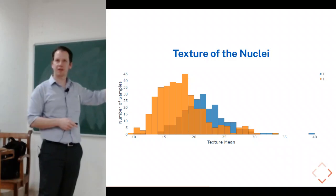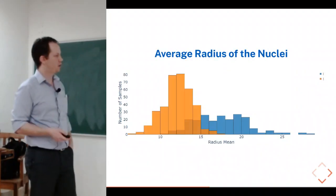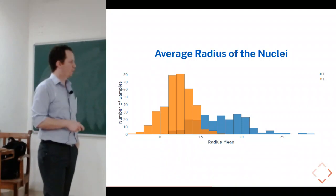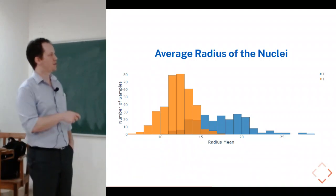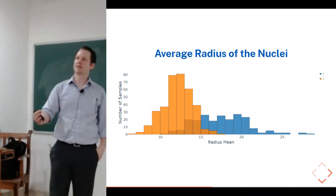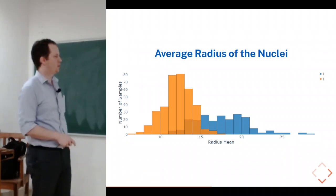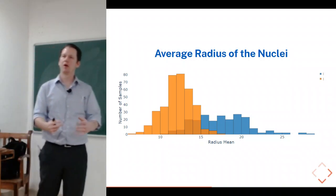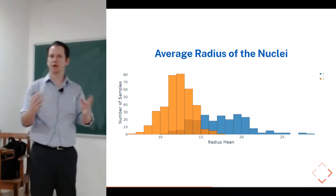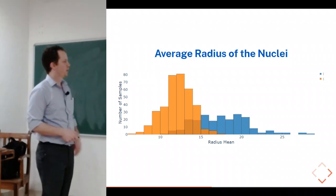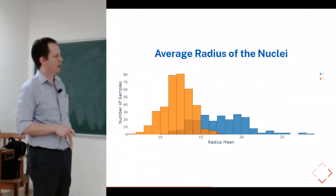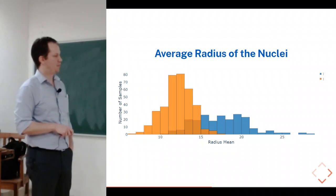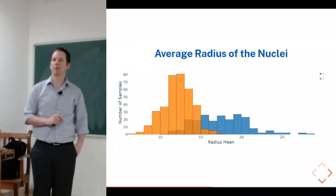Looking at another feature — average radius — we get much better separation, with lower overlap between the two classes. This makes intuitive sense: a more aggressive tumor will have bigger nuclei that look weird. Malignant cases have higher radius than benign cases, and the overlap is lower, making this probably a good feature to use.